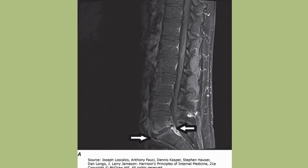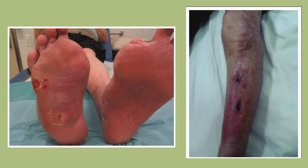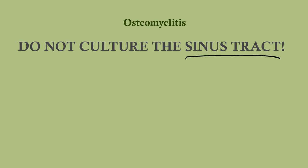On MRI you can see where the arrow points showing the extent of the infection. There's the sinus tract with localized inflammation and swelling. You can also see it on the foot — this patient is almost certainly a diabetic, status post left great toe amputation. This is how it typically happens. Do not culture the sinus tract — that's a common wrong answer choice. You must culture the bone. The sinus tract is not going to tell you much.